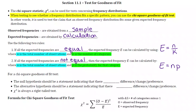For a chi-square goodness of fit test, the null hypothesis will always be a statement that indicates there is no difference, no change, or no preference — it just depends on the wording of the question. You could see any one of those three, but no matter what, we always state that there is none of them. The alternative hypothesis says the opposite — that there is a difference, change, or preference between the categories.